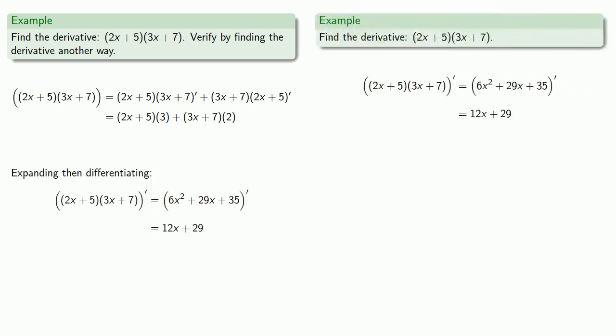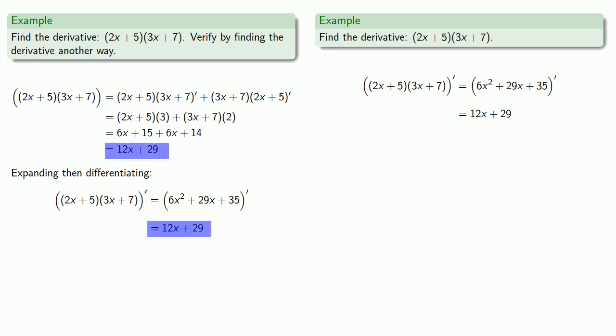We found that the derivative was 12x + 29. But this isn't what we found as the derivative using the product rule — is the product rule false? Maybe some things on the internet aren't true. Before we completely abandon our product rule, we might do a little bit of algebra. And we find that we do actually get the same derivative, just in completely different forms. Depending on how we find the derivative, we may get two different expressions, but as long as we've done everything correctly, those two expressions will be the same after some algebraic simplification.